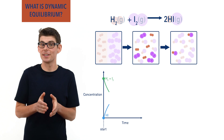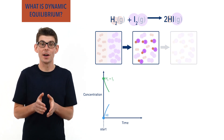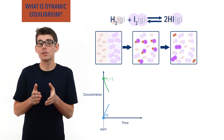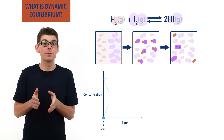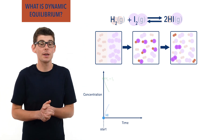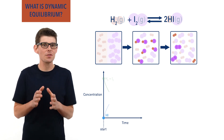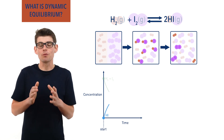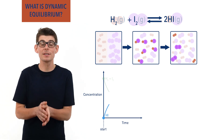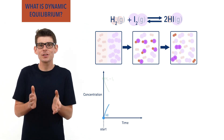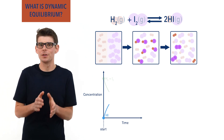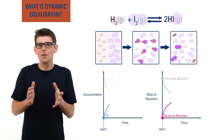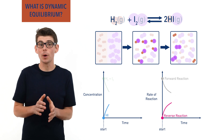As hydrogen iodide starts to get formed, it can start to react to form hydrogen and iodine — the backwards or reverse reaction. Initially, there is a low concentration of hydrogen iodide, meaning the rate of this reverse reaction is pretty slow. However, as the concentration of hydrogen iodide starts to increase from more of the hydrogen and iodine reacting together, the rate of the backward reaction will start to increase and will happen faster. As time goes on, the rate of the forward reaction decreases and the rate of the reverse reaction increases.